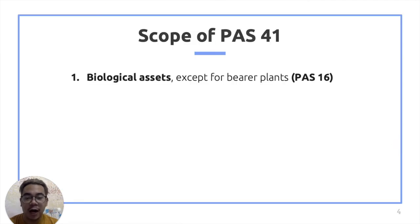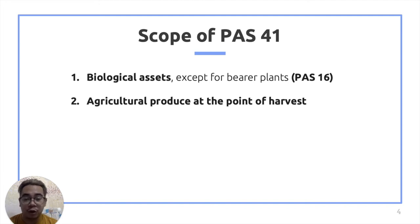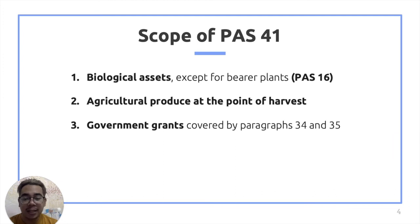PAS 41 applies to: number one, biological assets. Please take note that not all biological assets are under the scope of PAS 41 — bearer plants are an exception because they are accounted for in accordance with PAS 16, Property Plant and Equipment. Number two, PAS 41 will also apply to agricultural produce at the point of harvest. After the point of harvest, PAS 2 will already apply. And number three, PAS 41 is also applied to government grants covered by paragraphs 34 and 35.